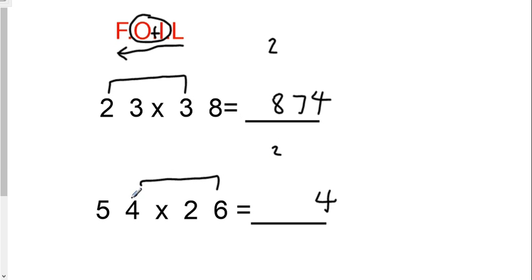Then we're going to do the inside and the outside, and we're going to add them together. So inside is 8, outside is 30, 30 plus 8 is 38. Don't forget the 2 that you carried. 38 plus the 2 is 40, so you would write the 0, and this time you're going to carry a 4.